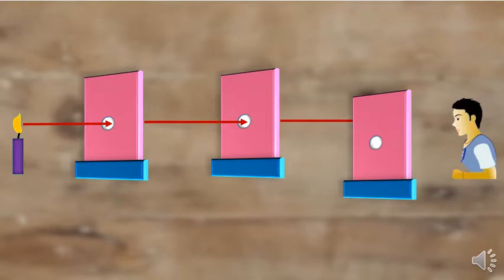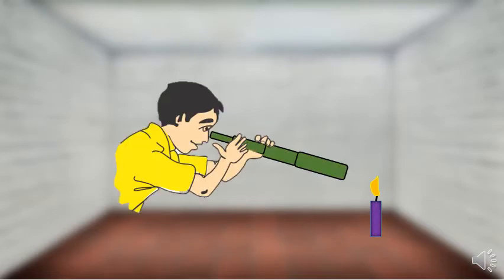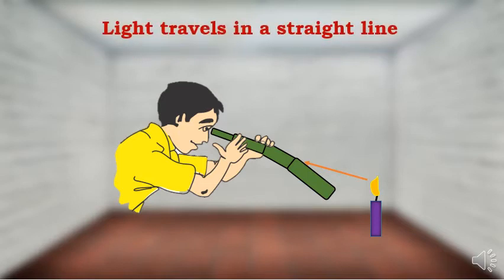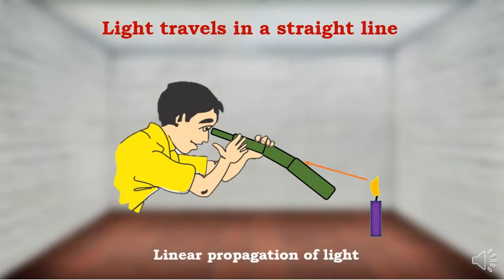Let us perform one more experiment. Put a candle in a room and observe the flame with the help of a straight pipe — you can see the light straight through the pipe. But if you bend the pipe a little bit, the light from the flame is no longer visible. This tells us that light travels in a straight line only. That is called the linear propagation of light.